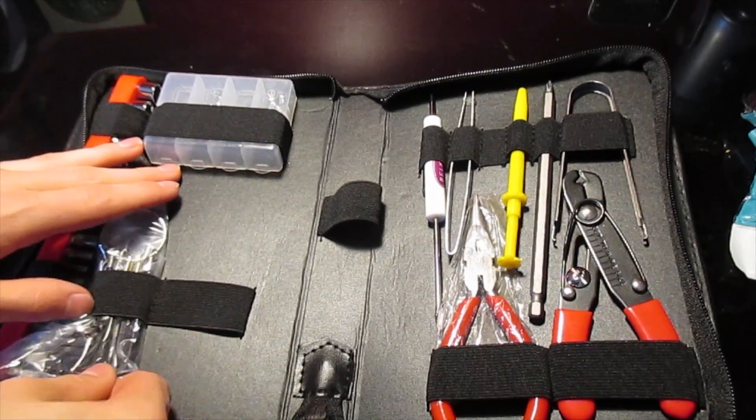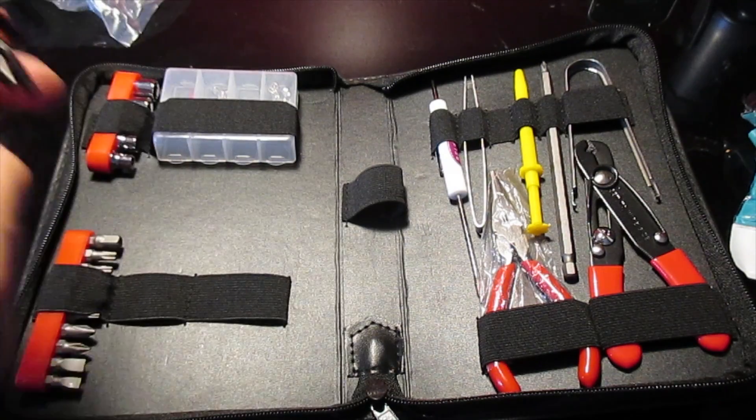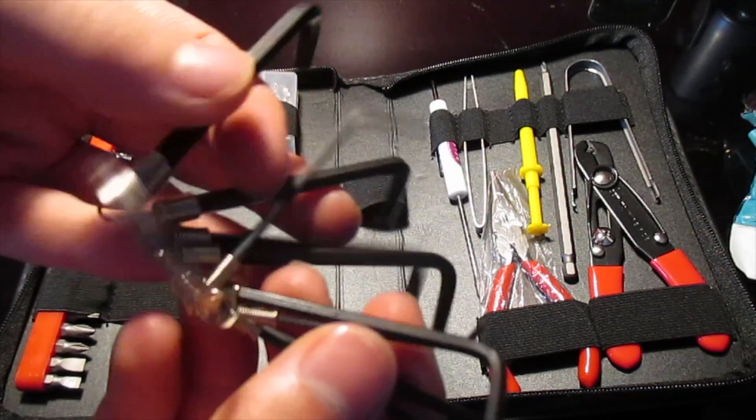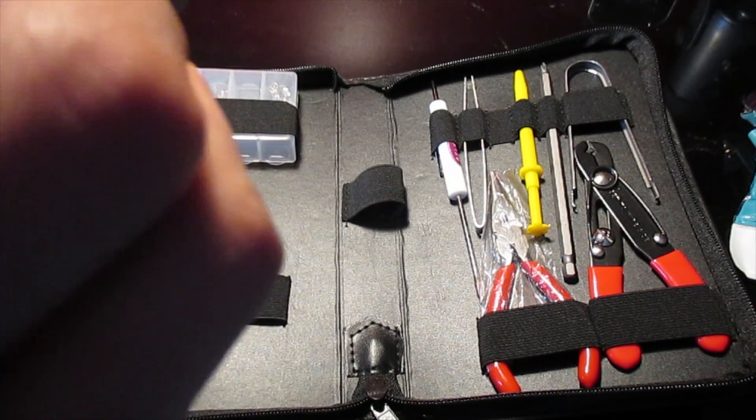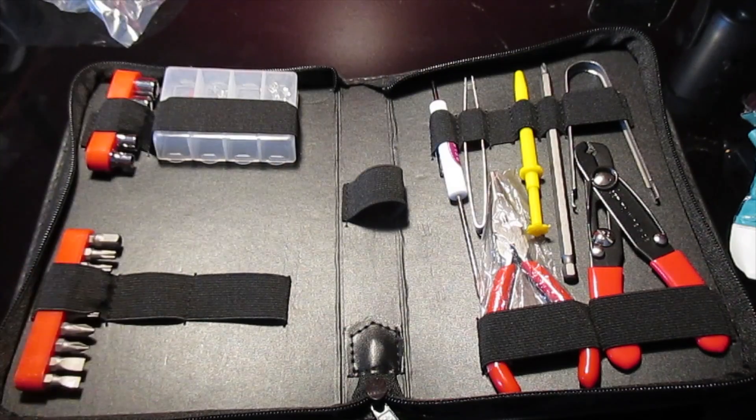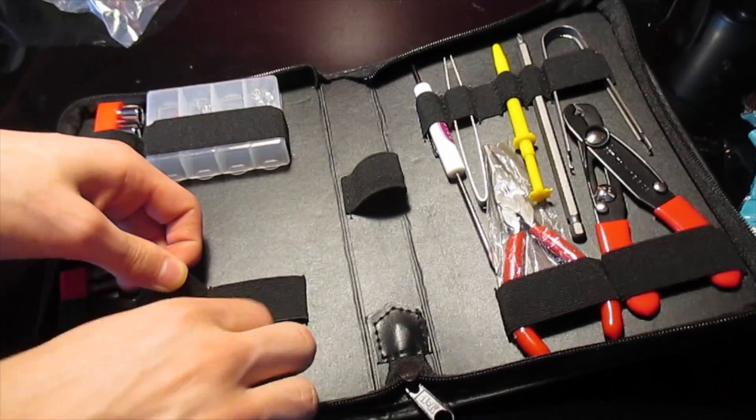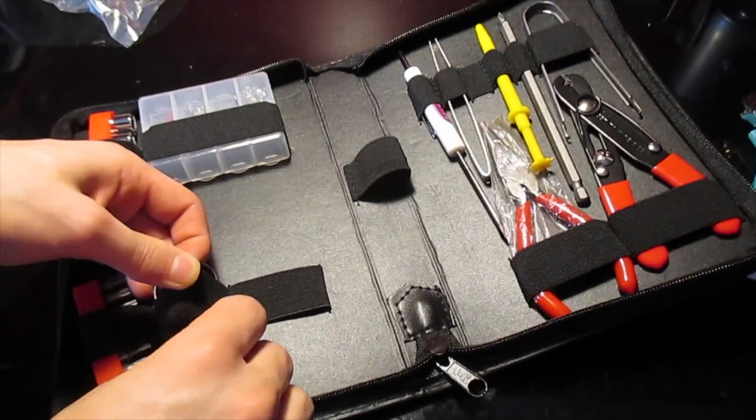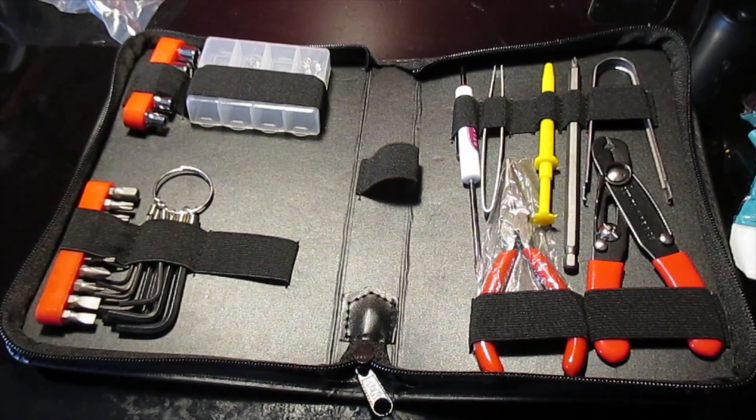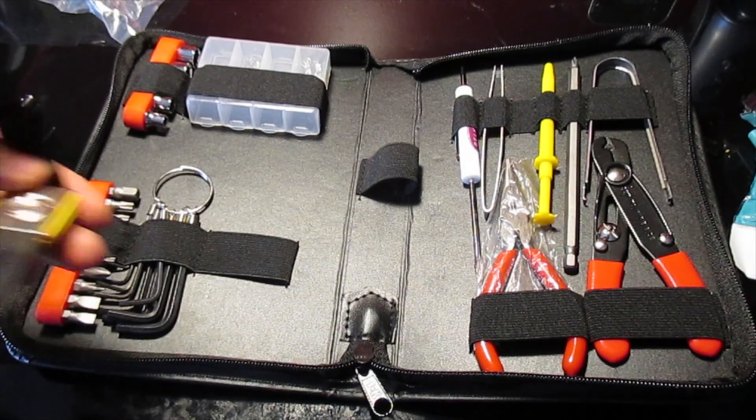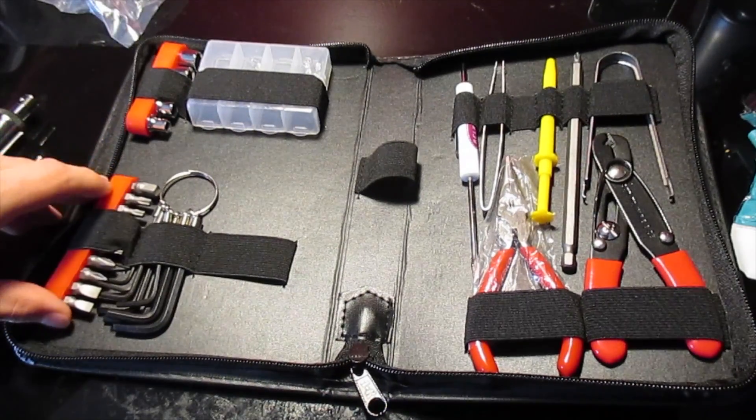Over here we have your Allen key set and the different sizes and they come on this little ring here that's easy to spread apart if you need to remove them to use them. I'm going to actually try to put some of this stuff back as I go so I'll have to figure out where it all goes. So those go right there, this goes in the middle and this goes right here. I don't know how easy it will be to keep it in there when it's not in the bag.